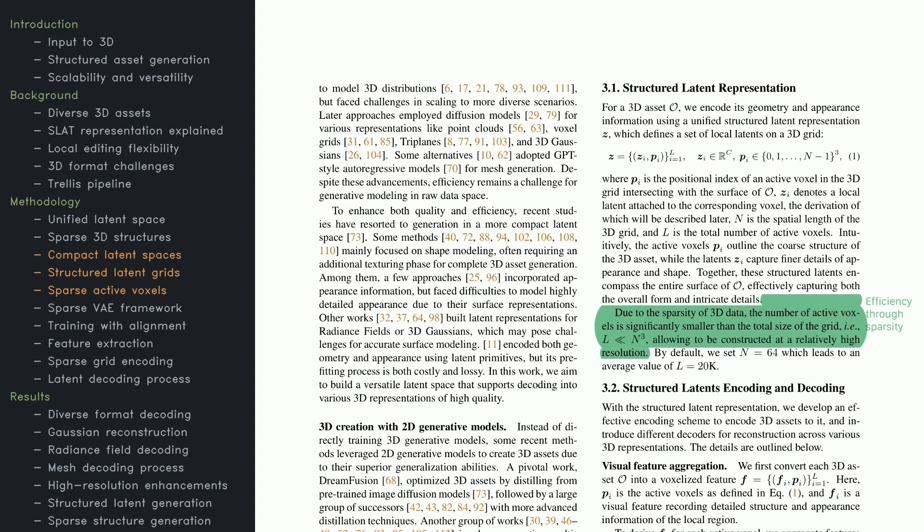Now let's look at how compact latent spaces help achieve efficient 3D generation. Compact latent spaces solve this by encoding both geometry and appearance in a single framework. Imagine a 3D grid where only a subset of voxels, the active ones outlining the object, are stored. Each active voxel holds localized information about shape and look. This keeps storage low and makes computation more efficient. The model can still represent large or detailed shapes thanks to this structured approach. So even with fewer points, you maintain high resolution where it matters.